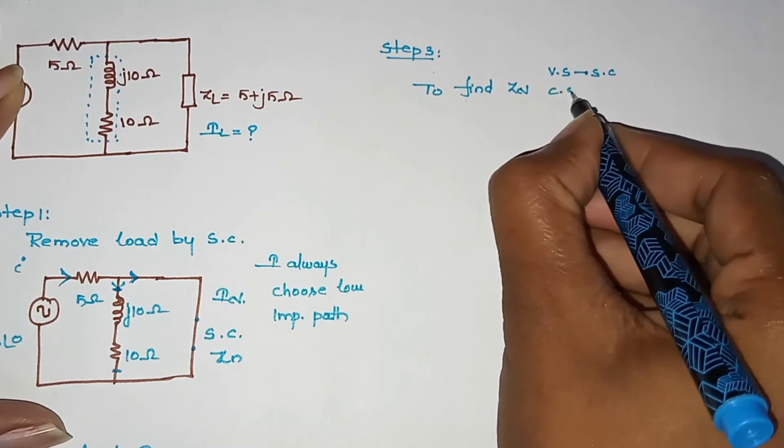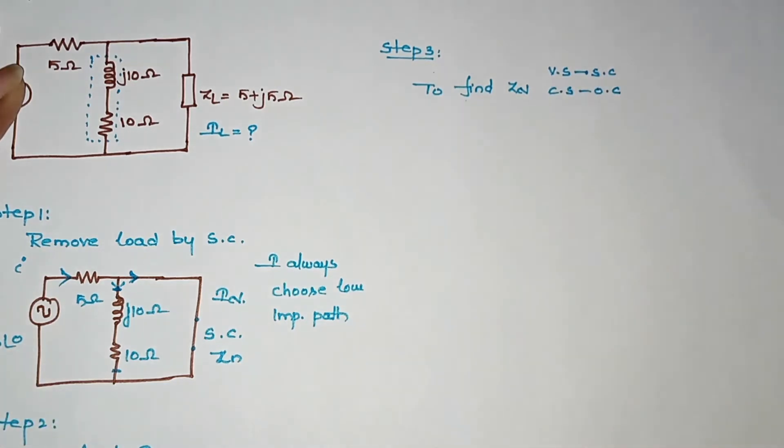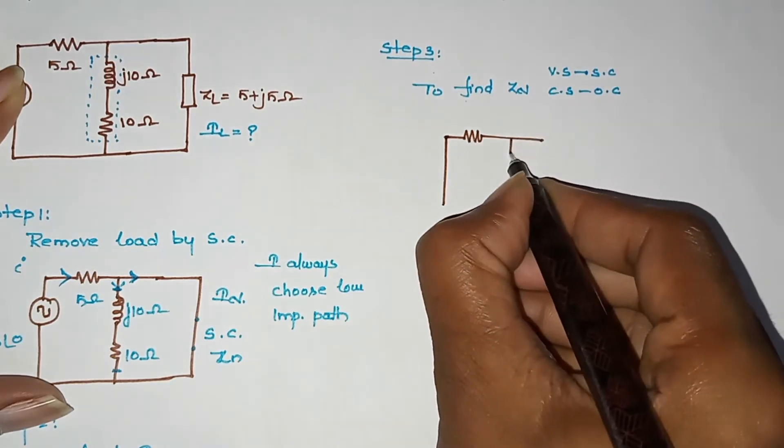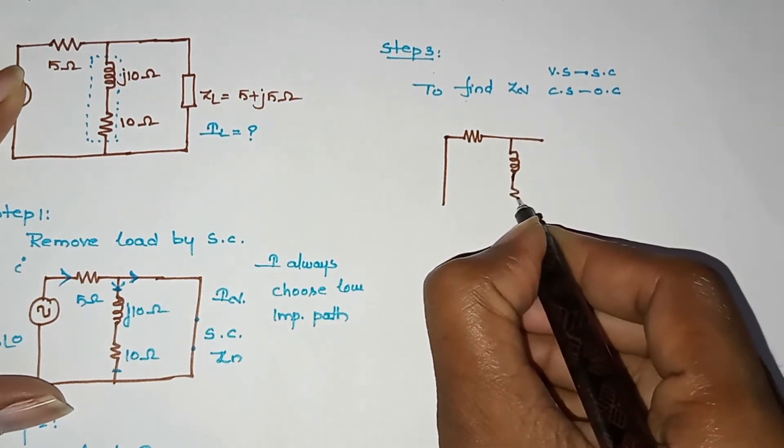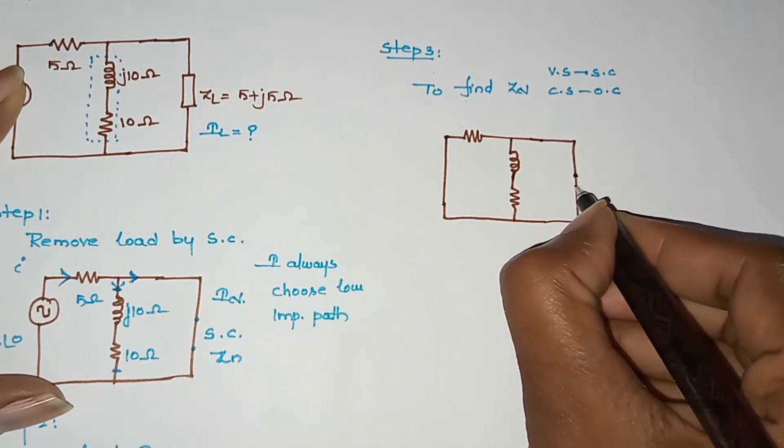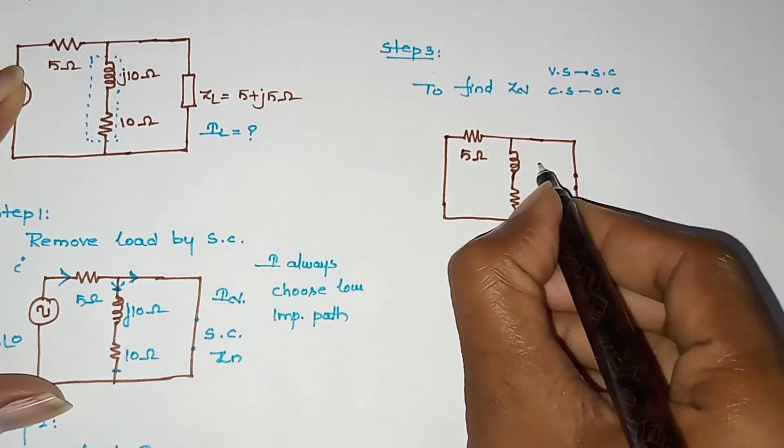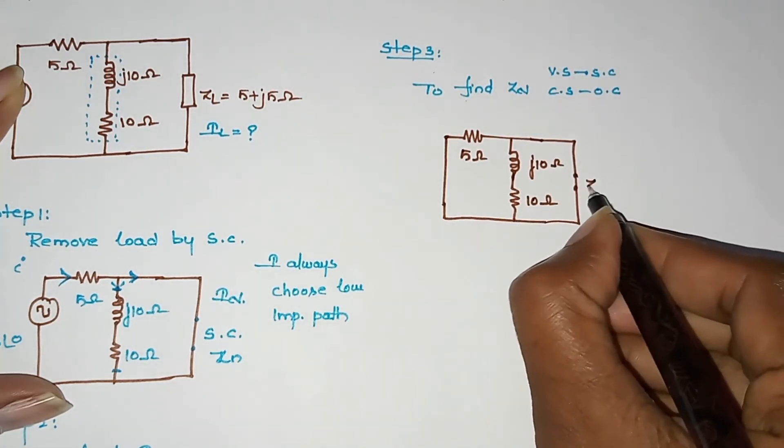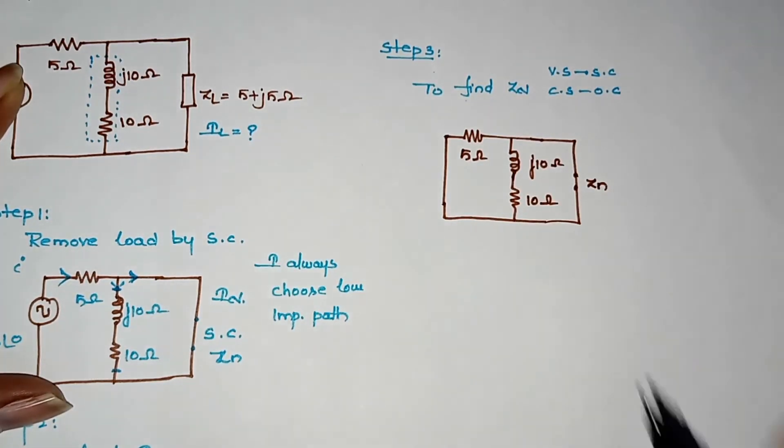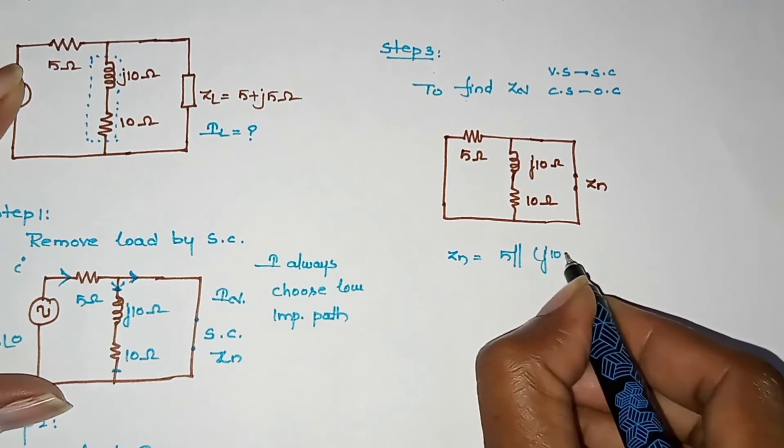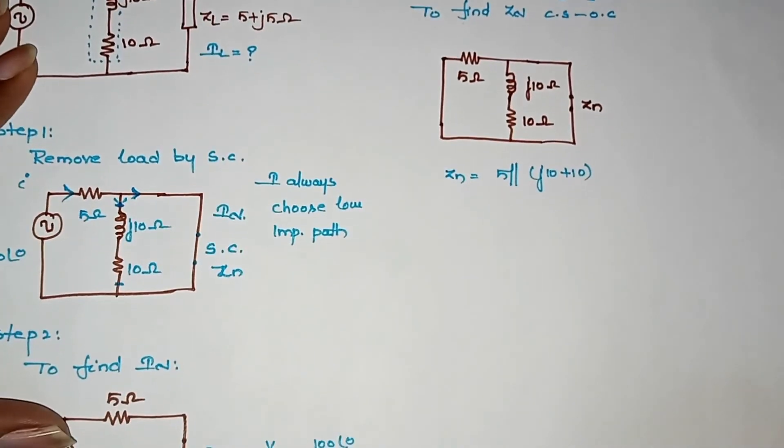Step 3, we have to short the voltage source. To find the voltage source and to find the current source. To short the voltage source, as you can see what we have found, we change here.